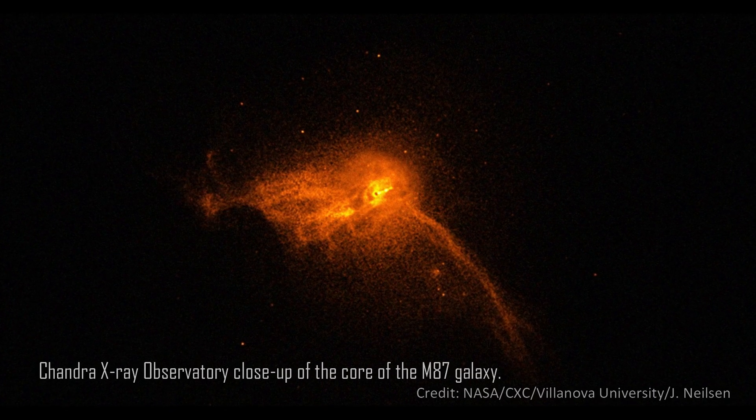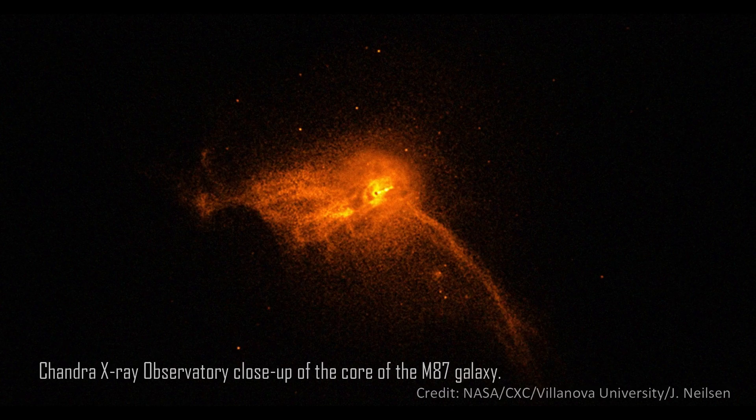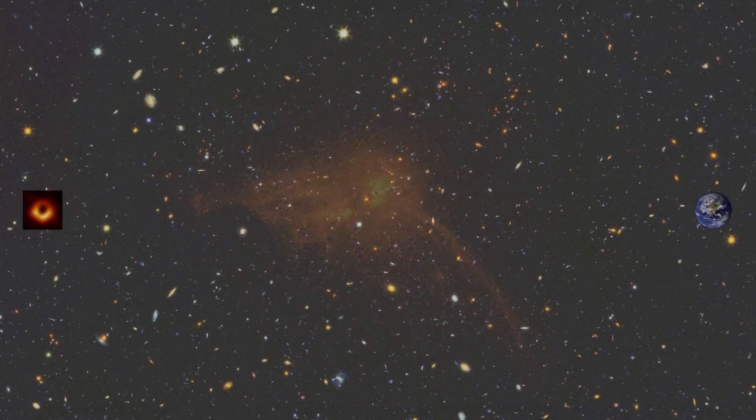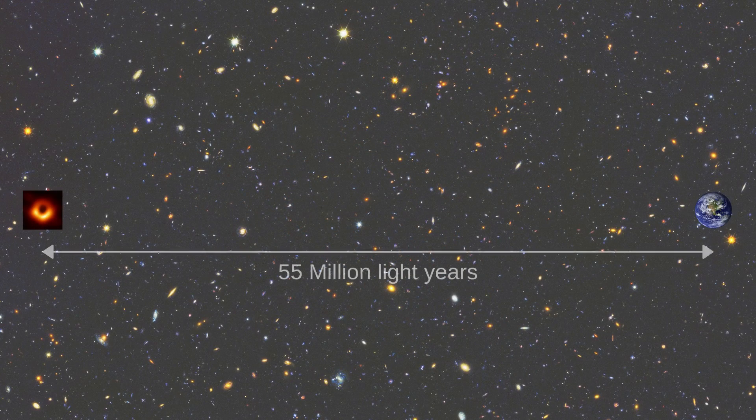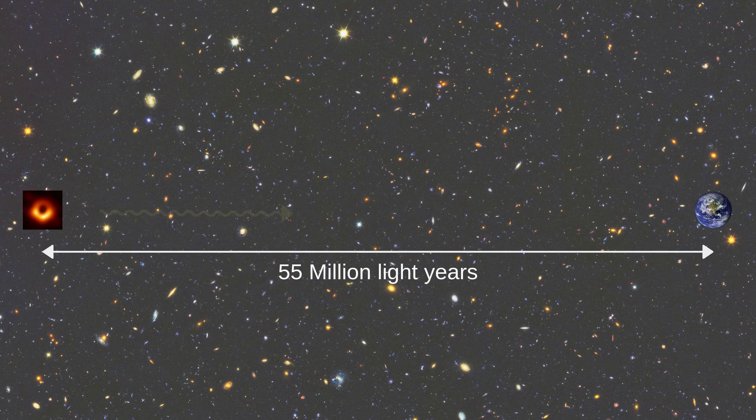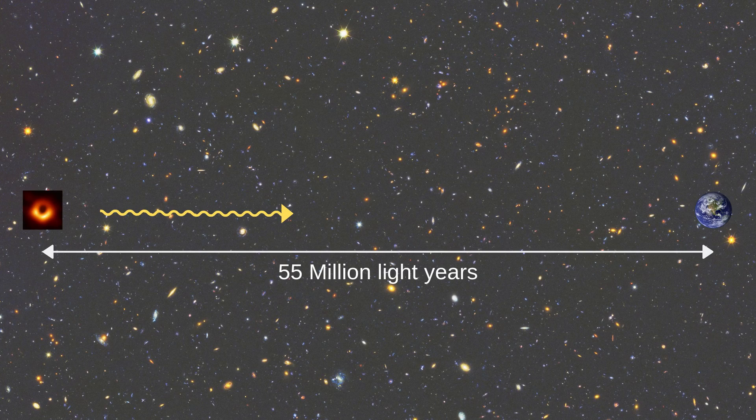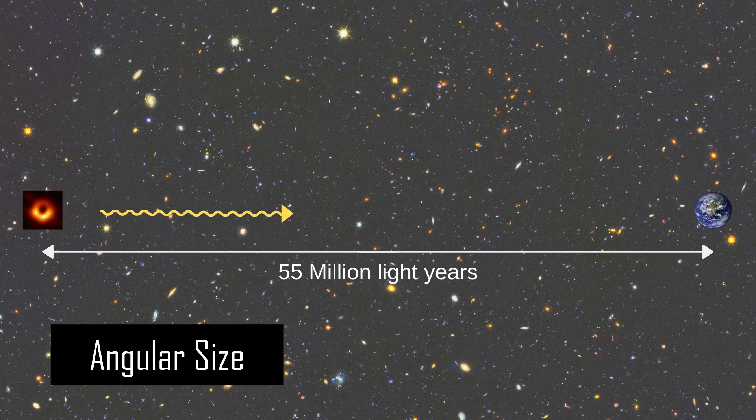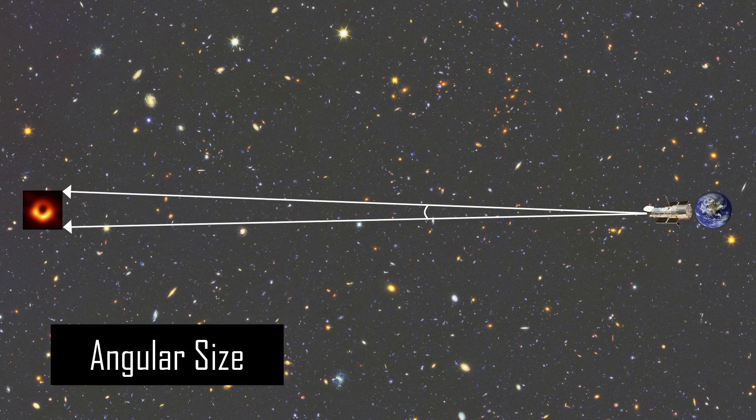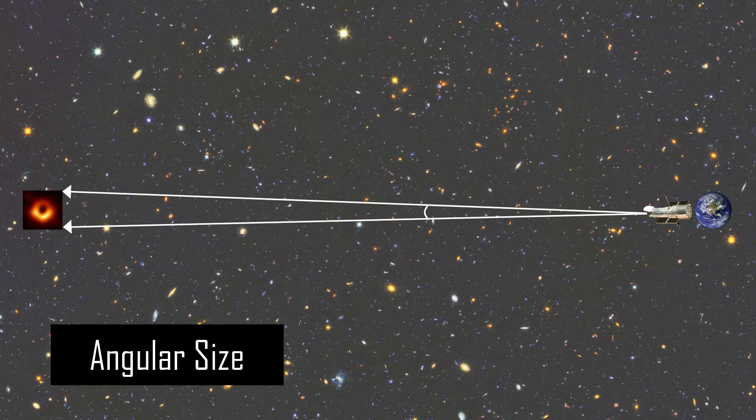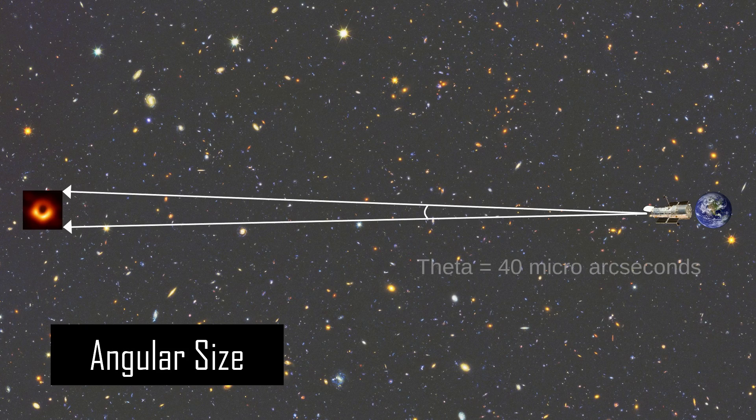Now, taking a picture of this black hole had its many challenges. First of all, this black hole is very, very far away, around 55 million light years away, which means that it took light 55 million years to reach Earth. Because of this, its angular size is very small. So what is the angular size? The angular size is the angular displacement that the light subtends on a telescope on Earth, and this black hole has an angular size of 40 micro arc seconds.